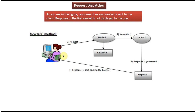Here we will see how the forward method works. Here you can see the client. The client sends a request to servlet one. Then servlet one decides it can't handle this request and will forward it to another servlet. So it will use the forward method to forward the request to servlet two. Servlet two will receive the request, process it, and generate the response, which will be sent back to the client. Servlet one's response is not sent to the client — only servlet two's response is sent to the client. This is how the forward method works.